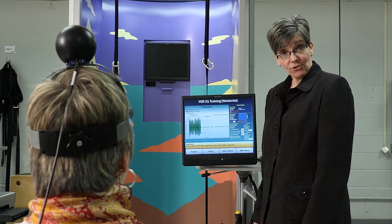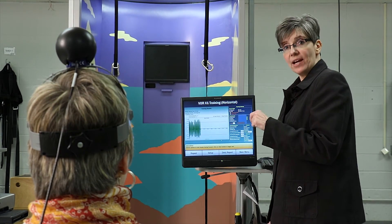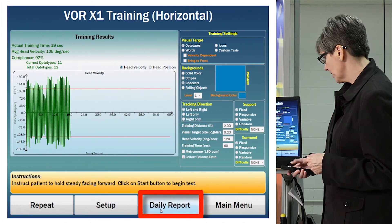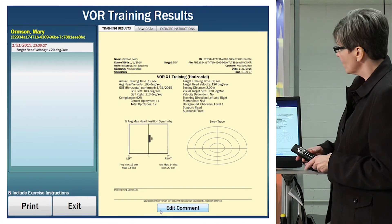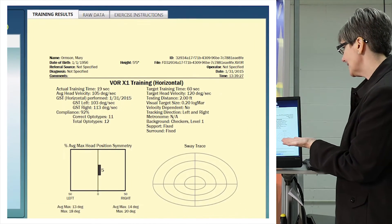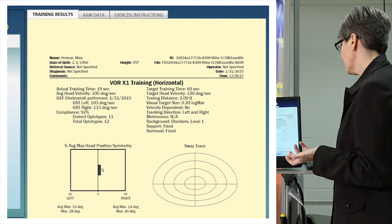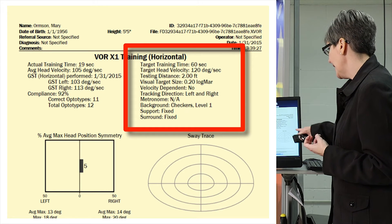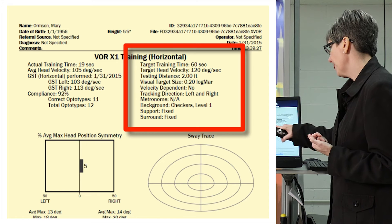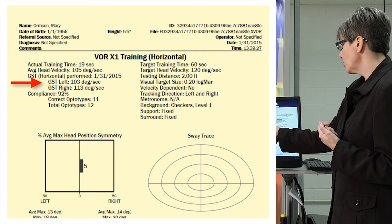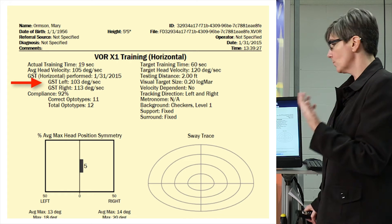Now I can print out for Mary and for the medical record an exact instruction set — for Mary to follow at home or for the next therapist working with her. If I click on daily report, there are three tabs: training results, raw data, and exercise instructions. The training results show what we did: 60 seconds at 120 degrees per second of head movement with a visual optotype of 0.2 logMAR. We can also see her GST results right here in the report.